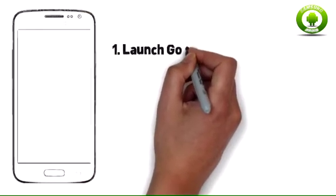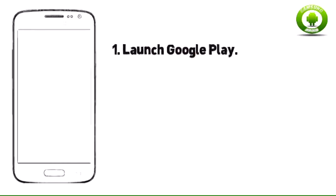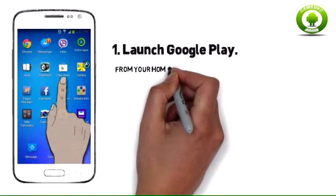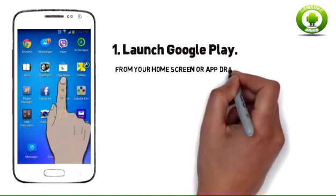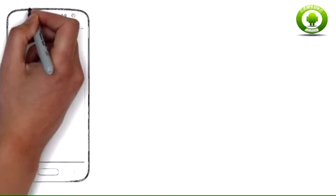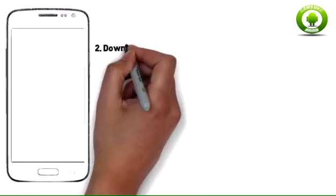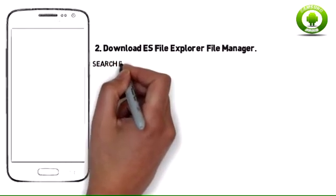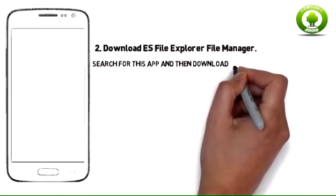Step one: Launch Google Play. From your home screen or app drawer, tap on the Google Play app to open it. Step two: Download ES File Explorer File Manager. Search for this app and then download and install it to your device. After downloading, launch the application.